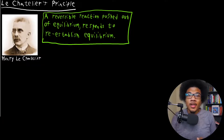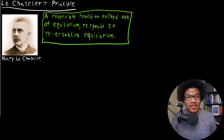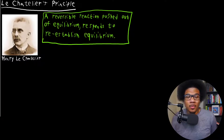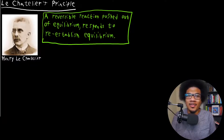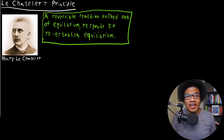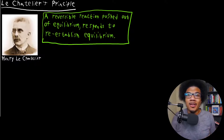In this video, we're going to introduce Le Chatelier's Principle. Le Chatelier's Principle was introduced by Henri Le Chatelier, a French scientist in the late 1800s. At the time, thermodynamics was pretty well established and they had a good thermodynamic understanding of chemical reactions and their stability at equilibrium. But what Henri Le Chatelier was really after was a unifying principle of how chemical reactions respond to changes in their equilibrium.